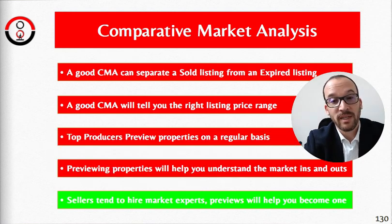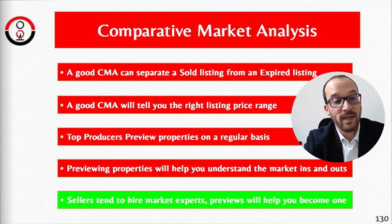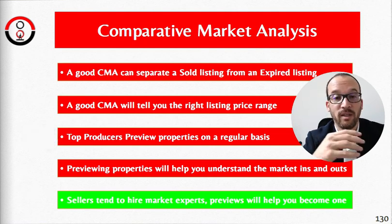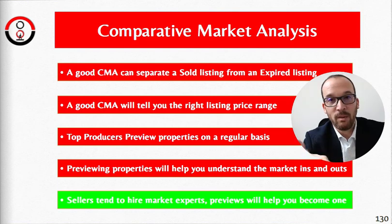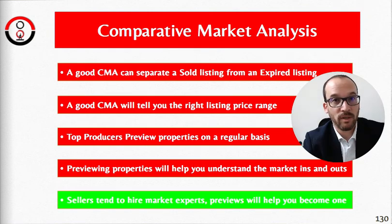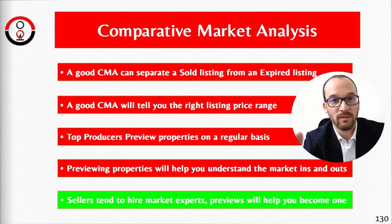A good CMA can separate a sold listing from an expired listing. The CMA will tell you the right listing price range. Top producers preview properties on a regular basis — to know everything on the market and to help them price the property correctly. In any market — buyer's, seller's, slow, strong — pricing is the most important thing to sell a property.